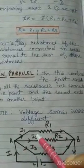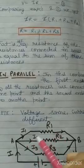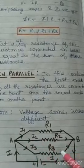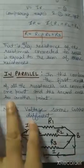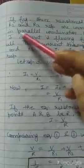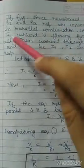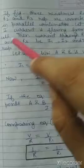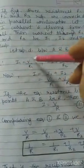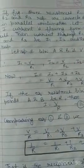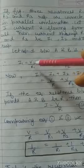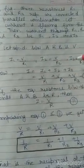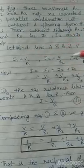Therefore, current will be different — I1 across R1, I2 across R2, and I3 across R3. In the figure, three resistances R1, R2, and R3 are connected in parallel. Let I be the current flowing from the cell, then current through R1, R2, and R3 be I1, I2, and I3 respectively. Let the potential difference between A and B be V. Using Ohm's law: I1 = V/R1, I2 = V/R2, I3 = V/R3, because V is the same.